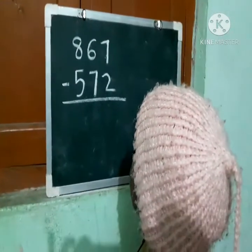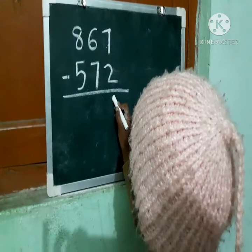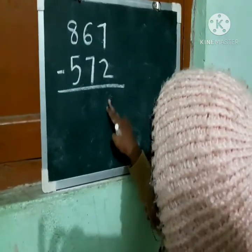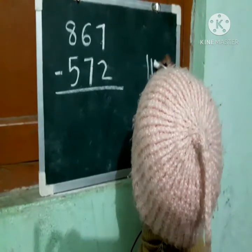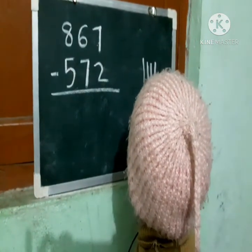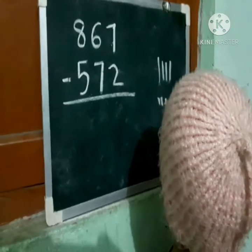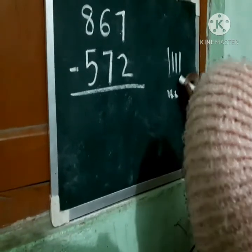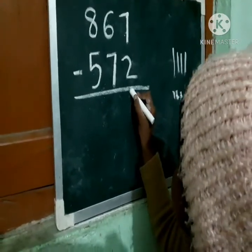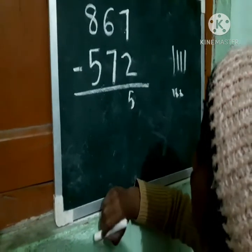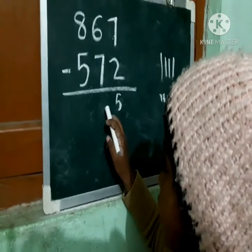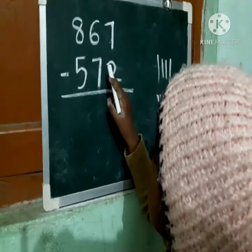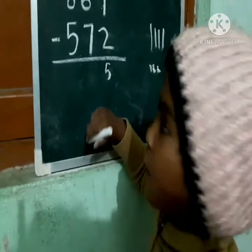And subtraction. 7 minus 2 is — let's count. 1, 2, 3, 4, 5, 6, 7, and minus 2: 1, 2 — it's 5. 1, 2, 3, 4, 5, 6, 7, and minus 2. Do you think we — students — do you think we can subtract 6 from 7? 1, 2, 3, 4, 5, 6, 7, and minus 1? No.